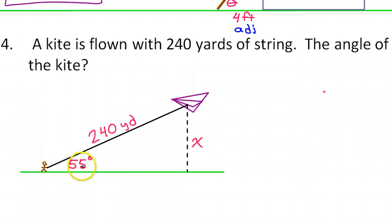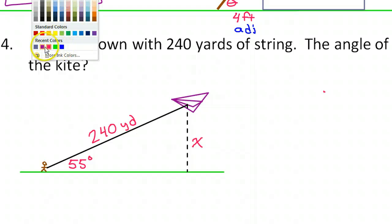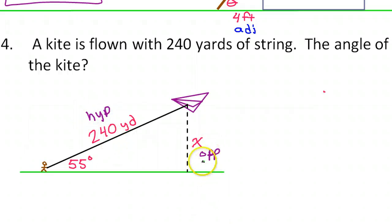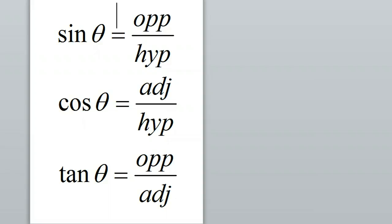From the perspective of this angle, our unknown over here is opposite because it's across from the angle. Of course, the 240 is the hypotenuse, no matter what. So which trig function involves opposite and hypotenuse? You should have this memorized by now — that is the sine function, opposite over hypotenuse.